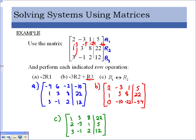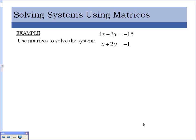Now let's talk about how to use matrices to solve a system of equations. This is going to seem like a long way to do it, but we're practicing on a simple set of equations. We're going to work with a 2x2 matrix — there's an X column, a Y column, a dividing line for the equal signs, and an answer column. The coefficients of X are 4 and 1, the coefficients of Y are negative 3 and 2, and the answers are negative 15 and negative 1.